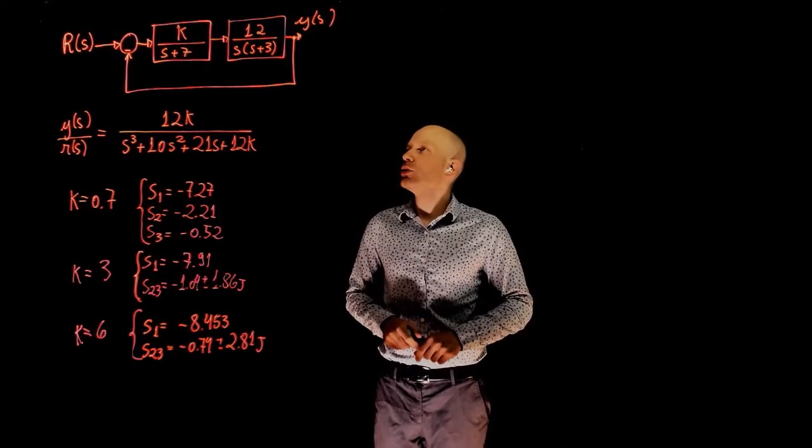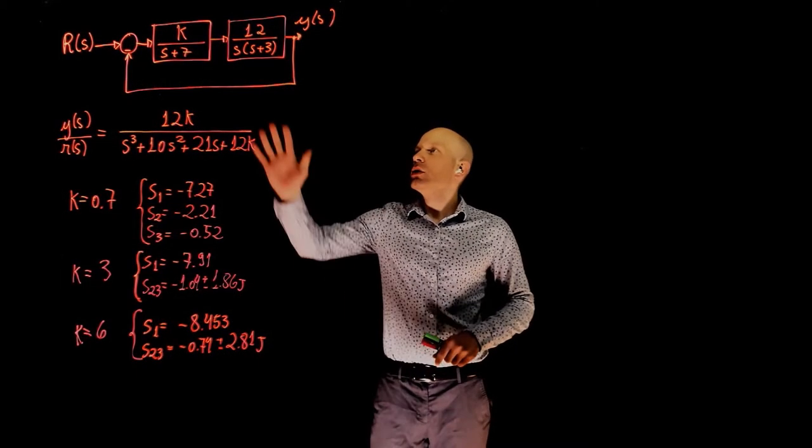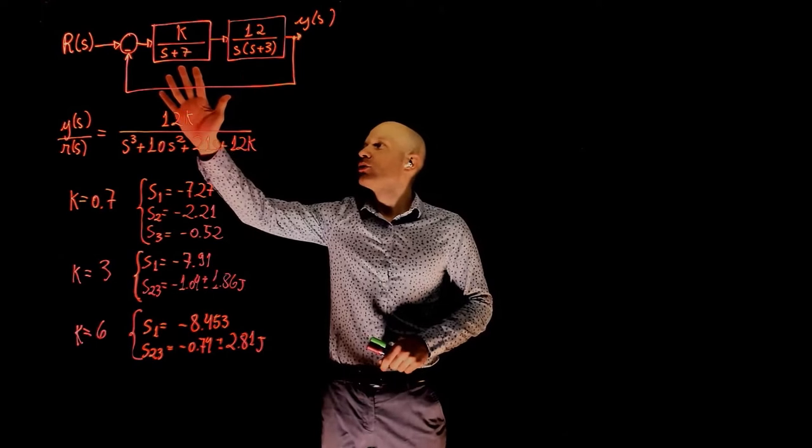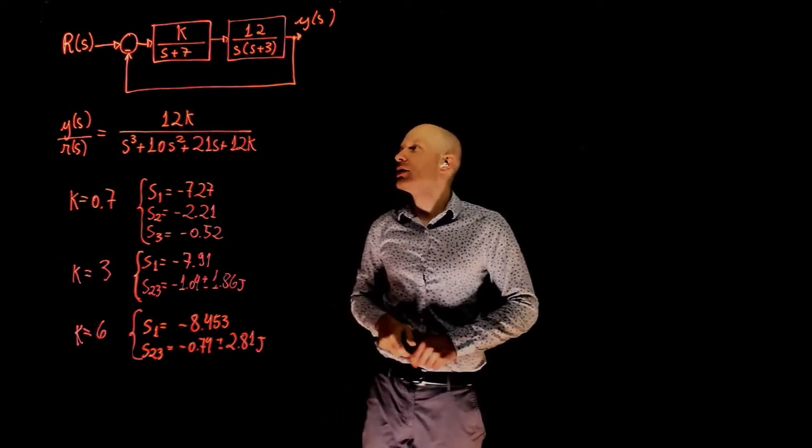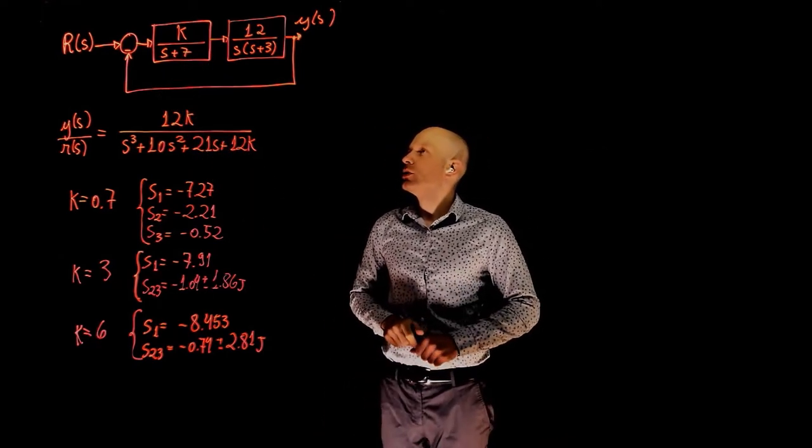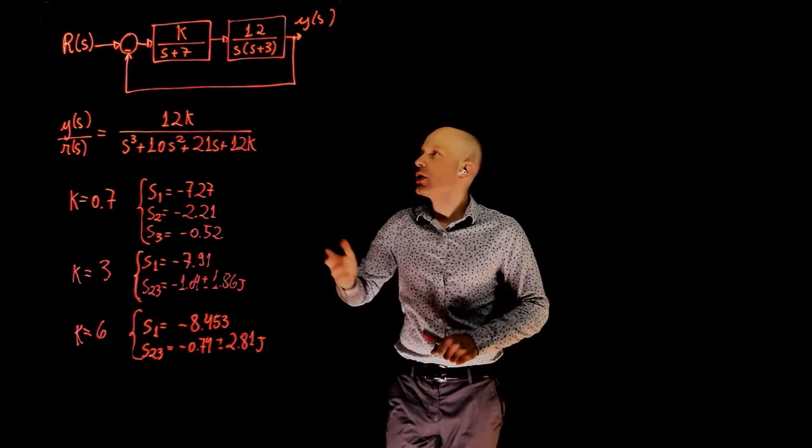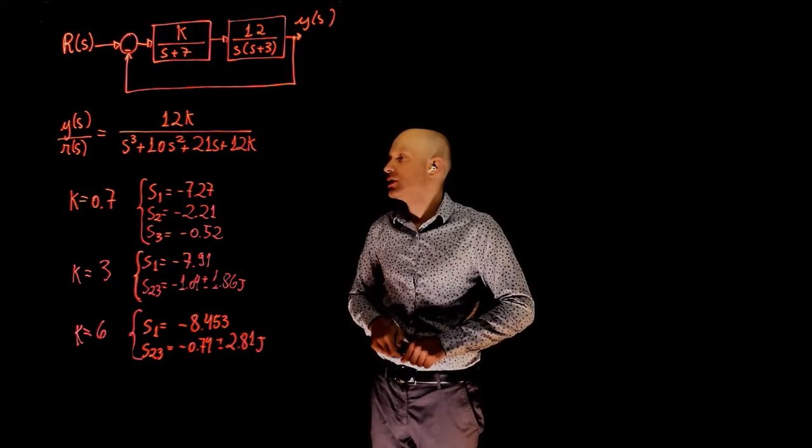This control system represents the roll control of an aircraft. We have the plant here and we have the controller here. The controller has gain K.